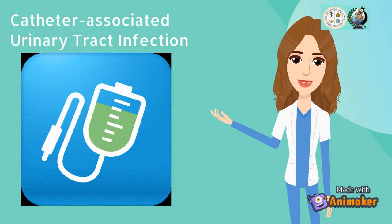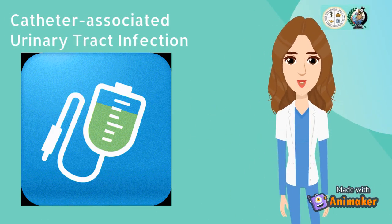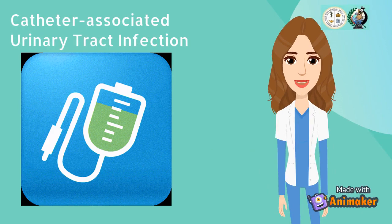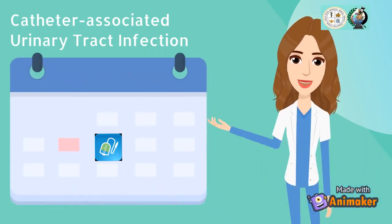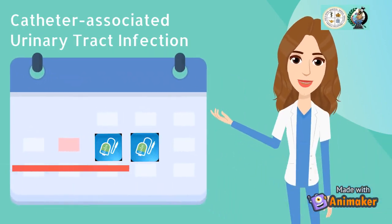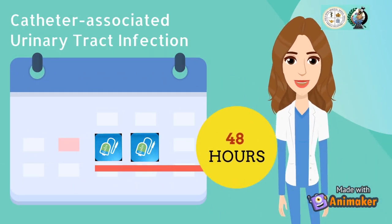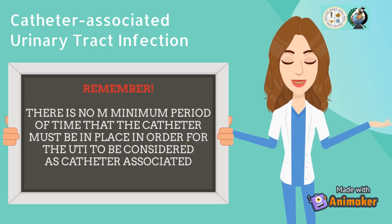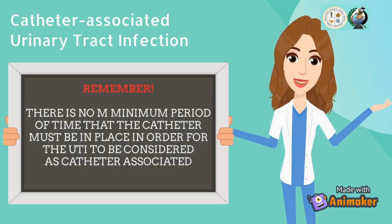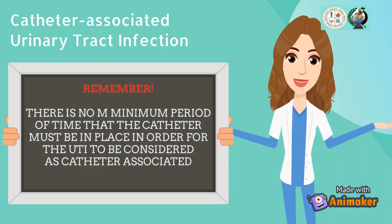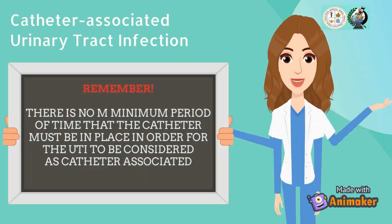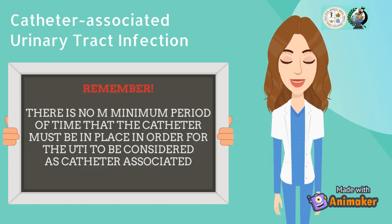The most important risk factor for developing catheter-associated urinary tract infection is its prolonged use of the device. CAUTI is also defined as a urinary tract infection that occurs in the patient who had an indwelling urinary catheter in place within 48 hours before the onset of infection. Remember, there is no minimum period of time that the catheter must be in place in order for the UTI to be considered catheter-associated. Got that?